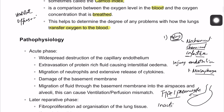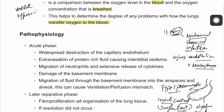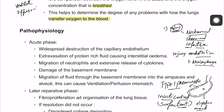Type 1 pneumocytes basically secrete surfactant, so the surfactant will not be working properly. Surfactant is responsible for lung compliance, so lung compliance will be affected. After a while, these inflammatory cells deposit inside the wall of the alveoli, leading to formation of a hyaline membrane. This hyaline membrane prevents the diffusion of oxygen from inside the alveoli to the blood vessels or capillaries.